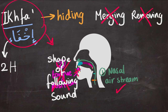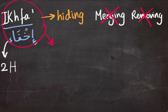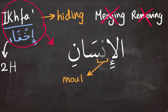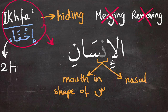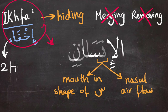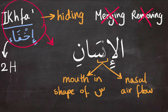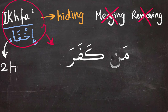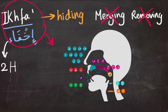For the word 'al-insan,' your mouth should be getting ready to pronounce the seen while letting air through your nose, letting the nasal trait dominate the sound for two harakat. So when saying 'al-insan,' my mouth looks like the seen, but I'm letting air through my nose. Another example: 'man kafar' — your mouth gets ready for the kaf but lets the sound resonate in the nasal cavity.